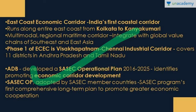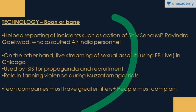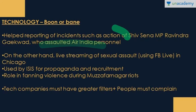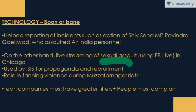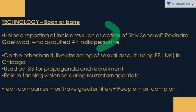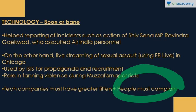In science and technology, we discuss technology as a boon or bane with two current examples. Technology acted as a force for good when it helped in the immediate reporting of the Shiv Sena MP Ravindra Gaikwad's assault on Air India personnel — the complaint may not have surfaced had someone not filmed it. On the other hand, technology is also bad: recently we saw live streaming of sexual assault on Facebook Live; ISIS uses it for propaganda and recruitment; it was also used to fan violence during the Muzaffarnagar riots. Therefore, technology companies should come up with greater filters and act immediately on complaints, and people must come forward to report — in the Chicago incident, 40 people saw the video but none complained to police.